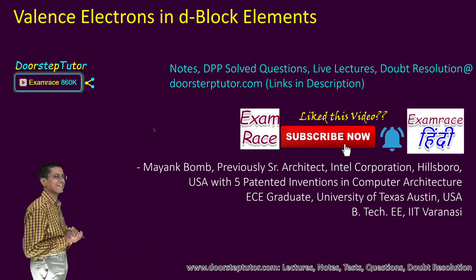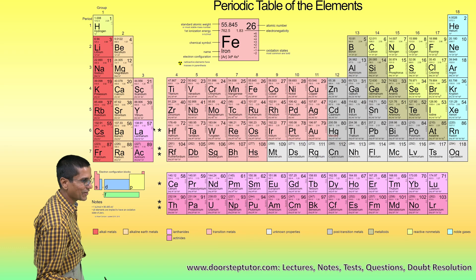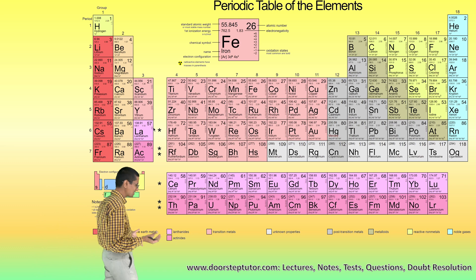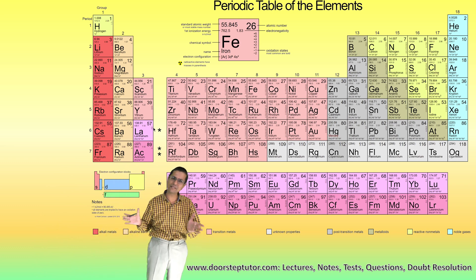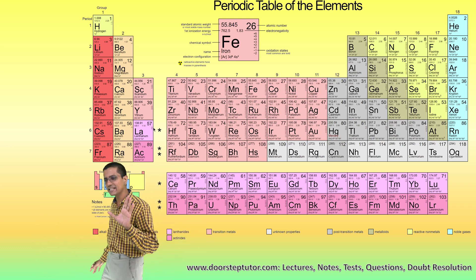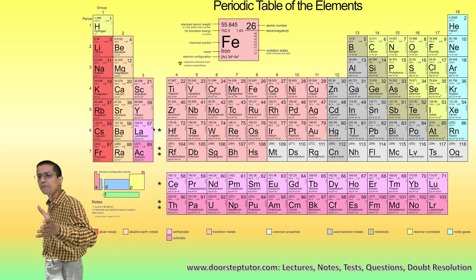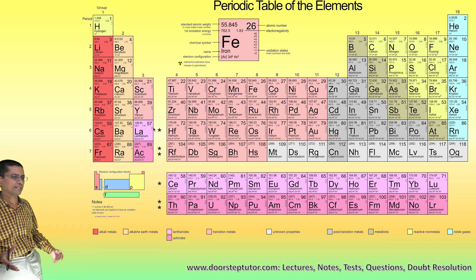Now, valence electrons in D-block elements. Valence electrons might seem like a very simple concept, and the concept itself is simple: valence electrons are those electrons which participate in bonding. Those are known as valence electrons.